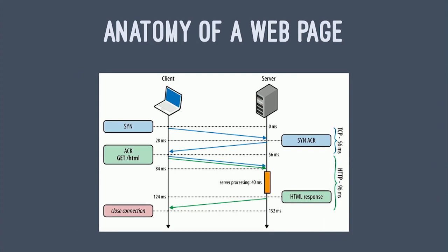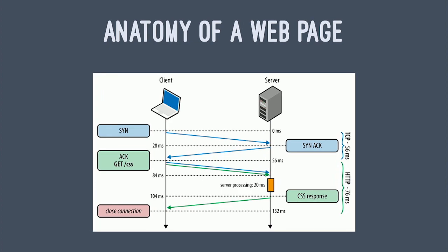Looking at the anatomy of a request for a page — say index.html — first a client connects to a server, they do a handshake, that's one round trip, and then the browser requests index.html. The server does some work, generates the page, and returns a response — in this case HTML — and that connection is closed. If that HTML contains a link to a CSS file, that entire process starts again: find the server, handshake, request the file, server responds, connection closed. So this is four round trips total just to fetch an HTML file and a CSS file.